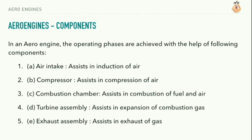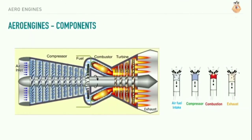Components of an aero engine: the operating phases are achieved with the help of the following components — air intake, compressor, combustion chamber, turbine assembly, and exhaust assembly. A gas turbine is essentially a heat engine using air as fluid to produce thrust. The working cycle of the gas turbine is similar to that of a piston engine; both have induction, compression, combustion, and exhaust phases. However, a gas turbine deals with much larger amounts of energy for a given size and weight, and has the added advantage of continuous and entirely rotational mechanical motion, whereas the piston engine uses intermittent reciprocating motion converted to rotatory motion by means of cranks. In consequence, the gas turbine runs more smoothly.